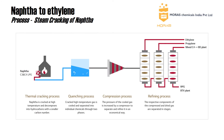The figure shows the steam cracking of naphtha by Moras Chemical India, where it starts with the thermal cracking process in which naphtha is cracked at high temperature and decomposes into hydrocarbons with smaller carbon numbers. Next is the quenching process where the cracked high-temperature gas is cooled and separated into individual chemicals through two phases. Then the compression process increases the pressure of the cooled gas by a compressor to separate and refine it economically. Lastly, the refining process separates the respective components of the compressed and dried gas in stages. Products include ethylene, propylene, mixed carbon, raw pyrolysis gas (RPG), and BTX.